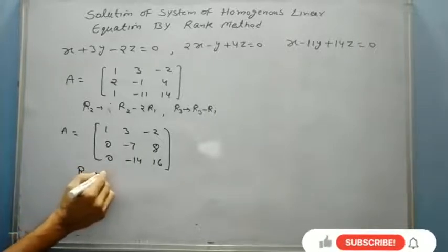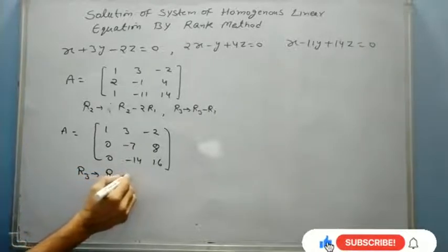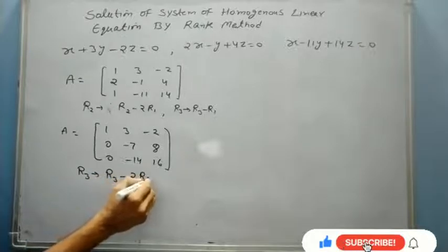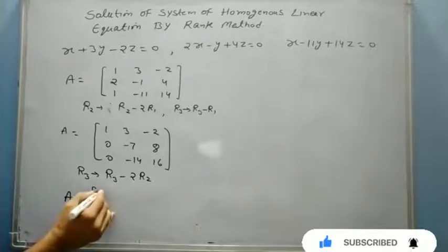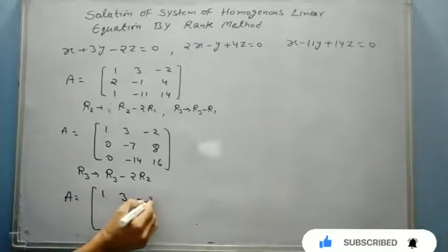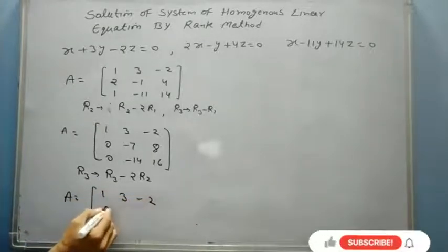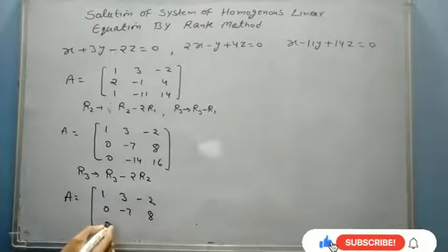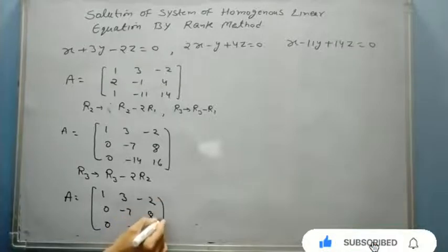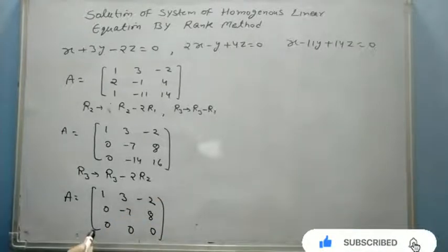R3 goes to R3 minus twice of R2. Then the matrix A will become 1, 3, minus 2, 0, minus 7, 8, and that will be 0, 0, 0. This is the last row.